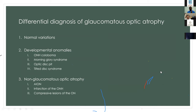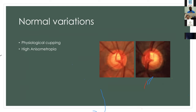Regarding differential diagnosis of glaucomatous optic neuropathy, it can include normal variations, developmental anomalies, or non-glaucomatous causes. Normal variations include mostly physiological cupping, also observed in moderate myopes.